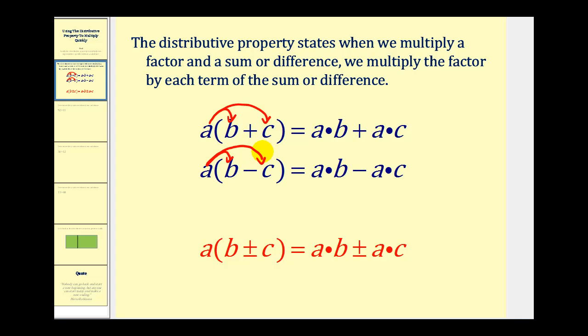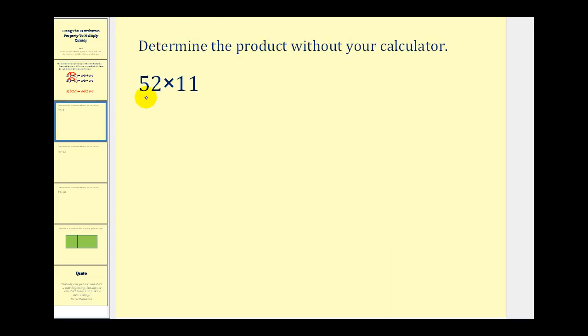We can use this property to help us multiply two-digit numbers rather quickly without the use of a calculator. So let's see if we can use the distributive property to find this product, 52 times 11. The distributive property allows us to rewrite this as 52 times the quantity 10 plus 1 instead of 11.